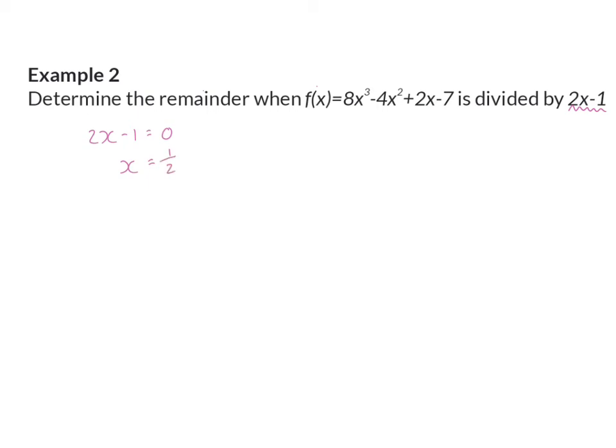Our second step is to then substitute into our function. So, we are going to substitute x with a half. Our third step is to simplify, and here we will get minus 6.